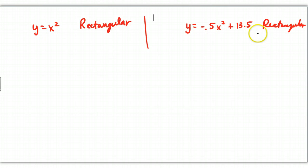So here they are in rectangular form both written out. Now I want to change this over to parametric. The shortcut method is that you just let x equal t. That's the easiest way to do it. Then y would be equal to t squared. If I do the same thing over here, x equals t and y equals negative 0.5t squared plus 13.5. Voila, parametric done.